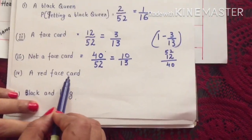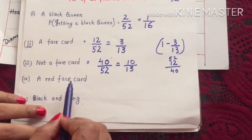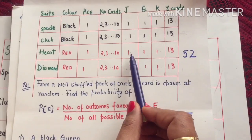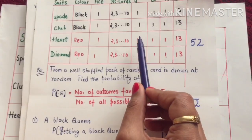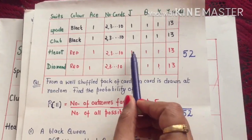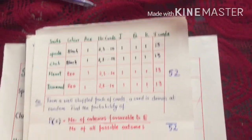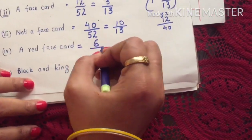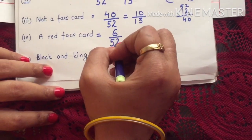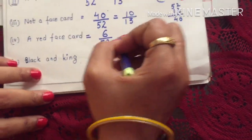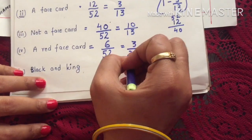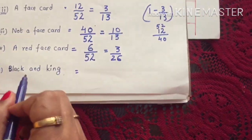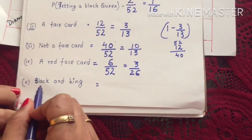Next: probability of getting a red face card. We have two suits of red — Heart and Diamond — and each has 3 face cards. So red face cards = 3 + 3 = 6. Favorable outcome is 6, possible outcomes remain 52, so the probability is 6/52 which reduces to 3/26.